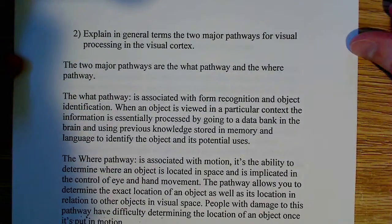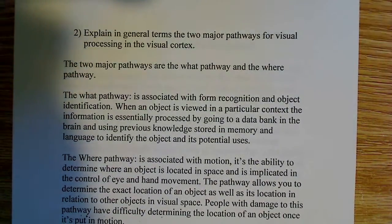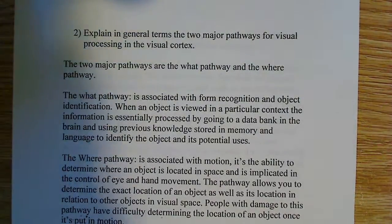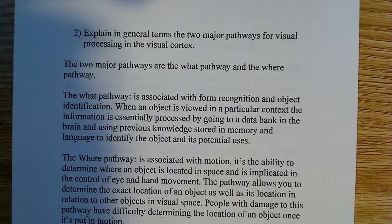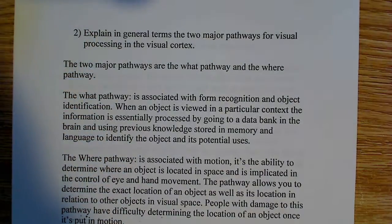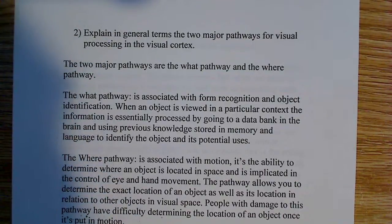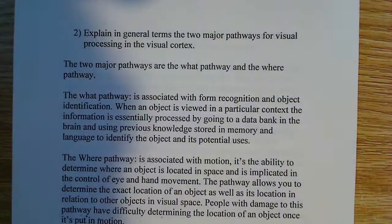Basically, what makes that happen is there are two major pathways, and those pathways are called the 'what' pathway and the 'where' pathway. I know this sounds kind of unscientific, but this is generally what they're called, and for the purposes of an introductory course, that's sufficient.